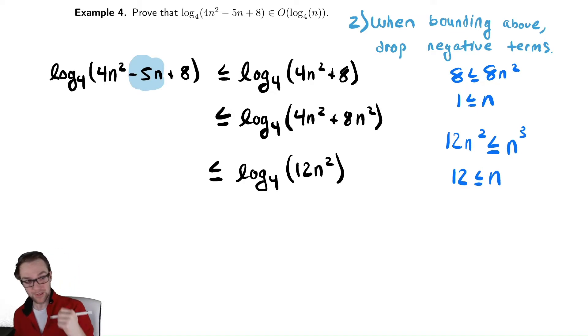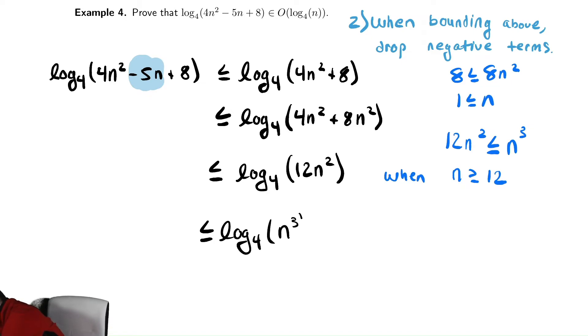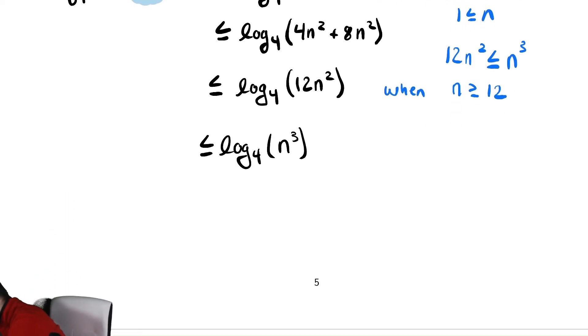So, so long as n greater than or equal to 12, I can make that substitution. So, let's write when, and maybe just for the sake of sanity, we're going to switch the inequality and write it as n greater than or equal to 12. I can make that substitution. We replace the 12n squared with n cubed. And now what I can do is I can bring the 3 out front, that same type of log rule we used before, bringing an exponential out front as multiplication, and we get 3 log base 4 of n.